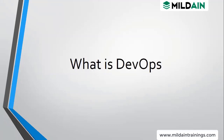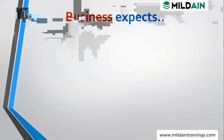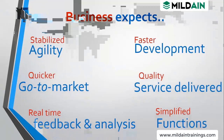With emerging technologies and present scenarios, customers need immediate feedback — something that is faster to market — and there is a lot of competition. So what the business expects is stability, agility, quicker go-to-market, real-time feedback and analysis, faster deployment, faster development, quality service delivered, and simplified functions. In the traditional model this is not achievable because there is no agility.